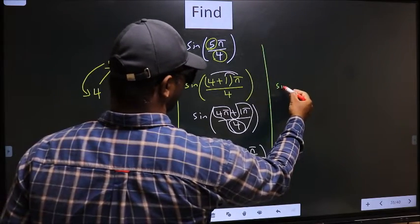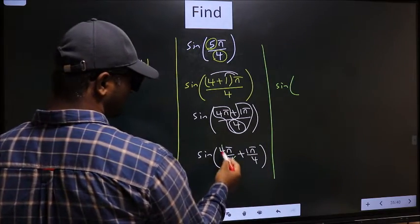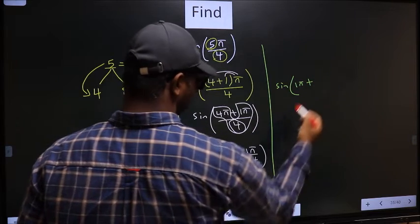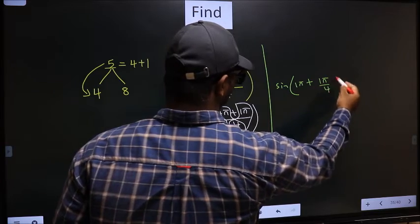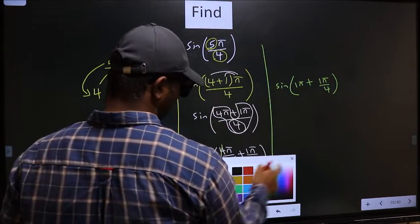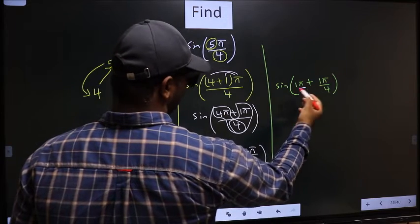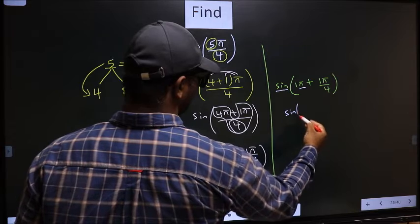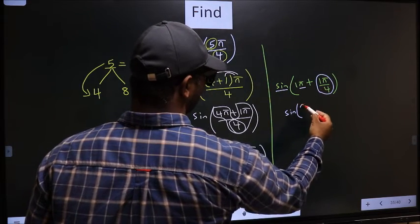Next, sin of, here you cancel 4. So you get 1 pi plus this angle as it is you write. Next, here we have pi. So sin is not going to change. It will remain sin. And inside we get this angle pi by 4.